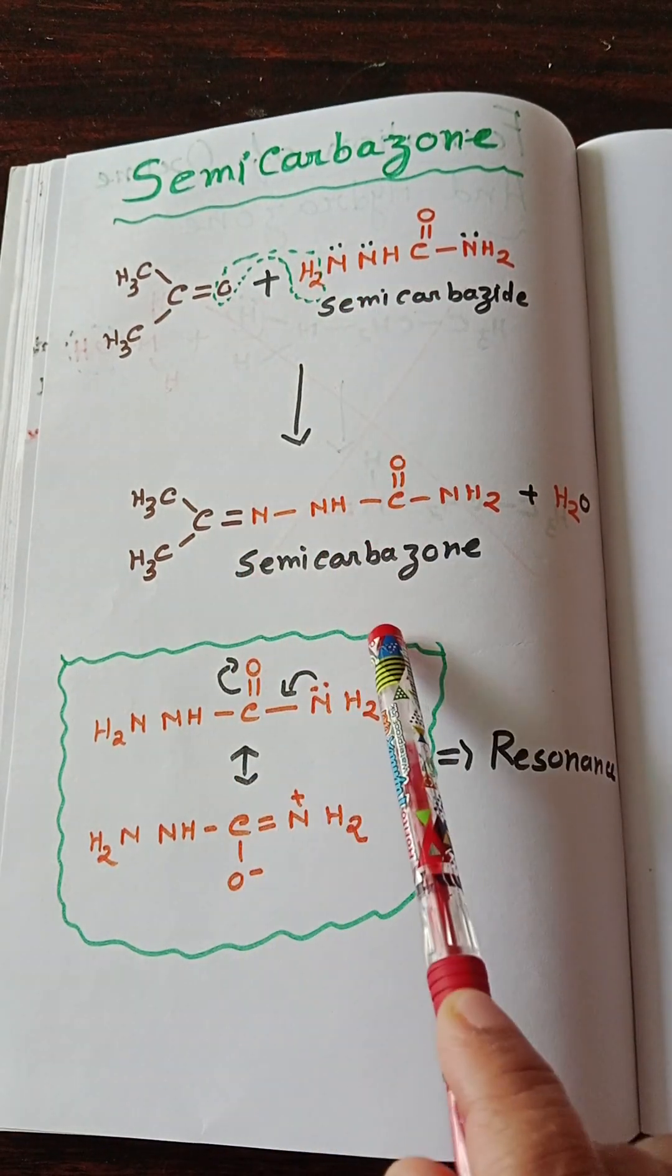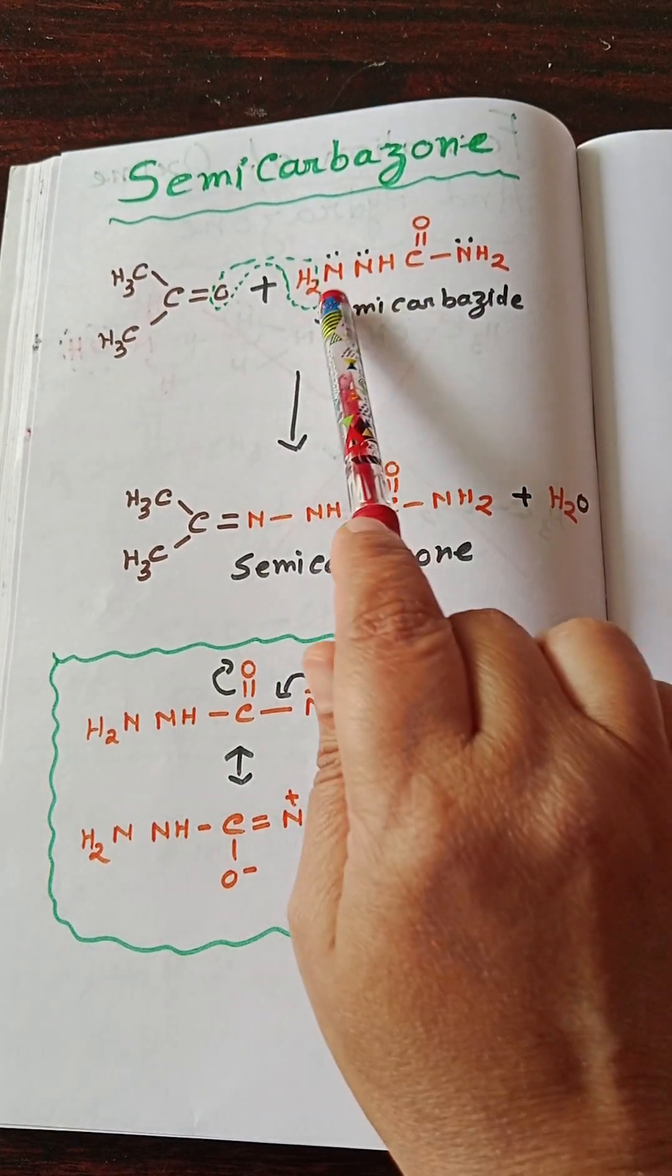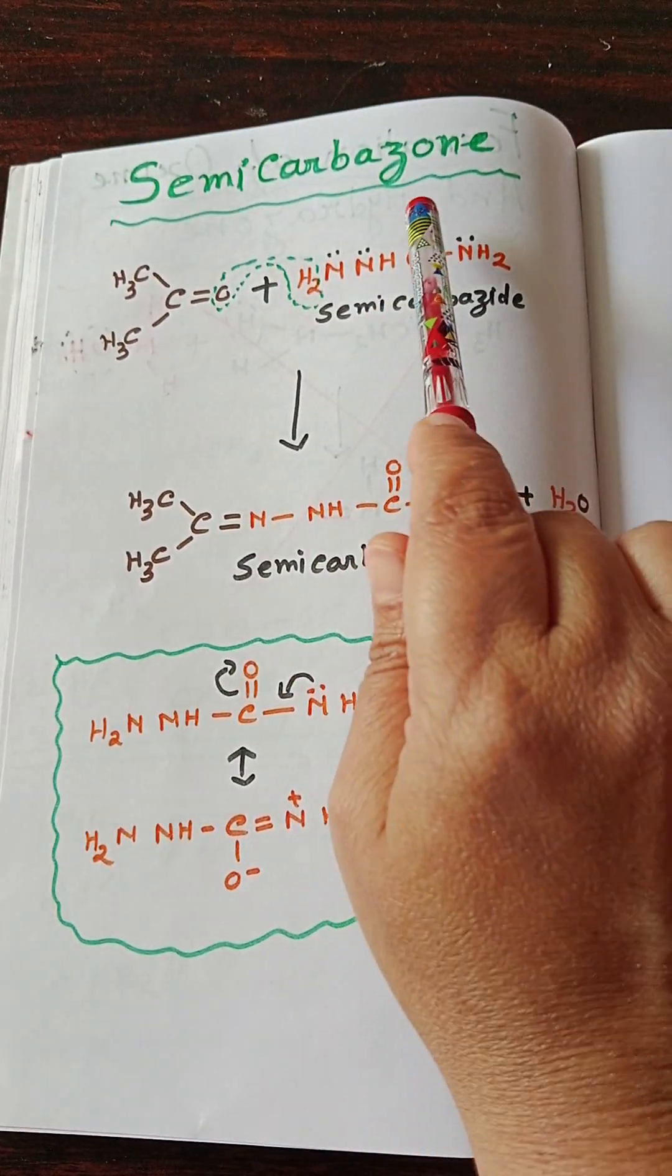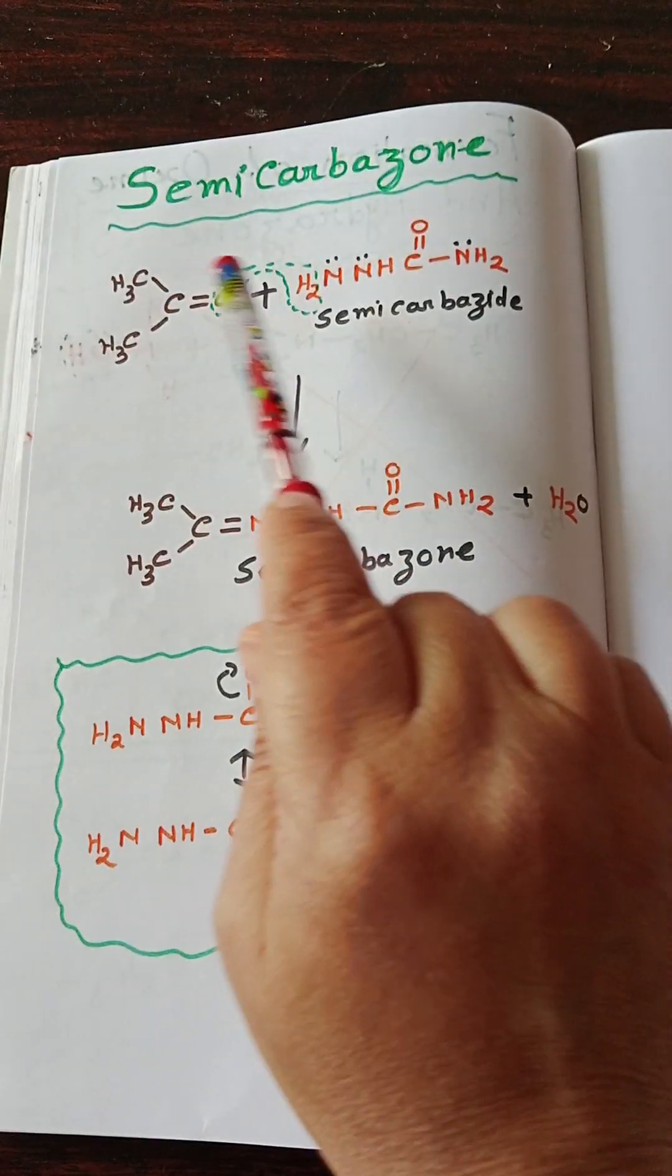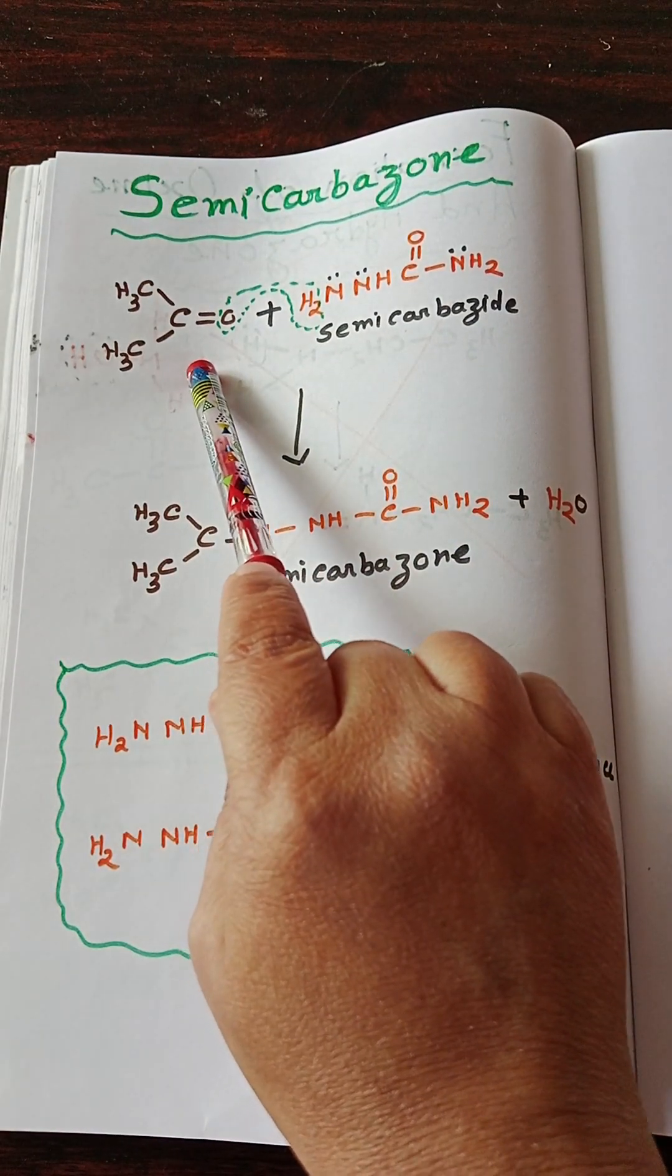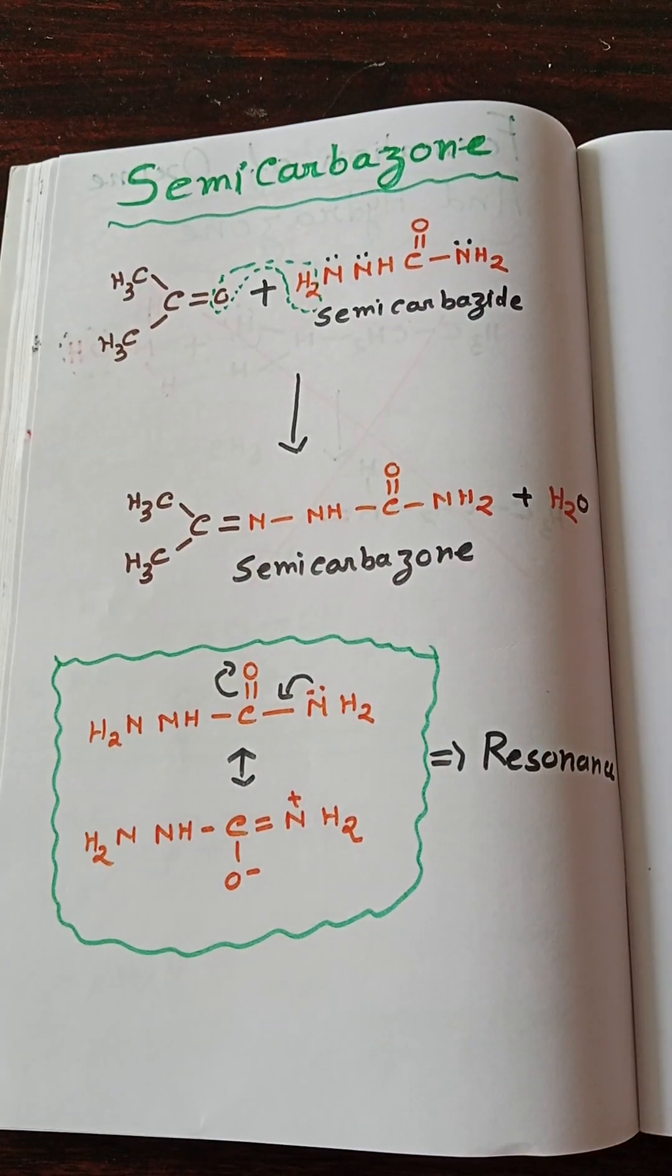This is the reason why during semicarbazone synthesis, the NH2 which is not connected with the C=O group binds with the carbonyl compound and forms semicarbazone.